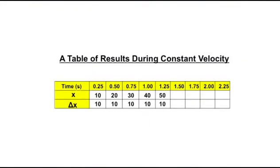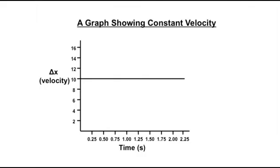Draw a table listing the time intervals against the distance travelled during each time interval, and then calculate the displacement for each time interval, which will be delta x. Now plot a graph of time versus displacement. This will show the graph for constant velocity.